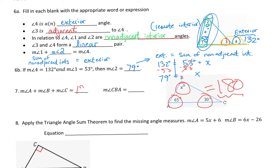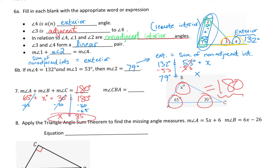Angle A plus angle B plus angle C needs to equal 180. We know that angle A is 65 degrees, angle B is X degrees, and angle C is 30 degrees — it's got to equal 180. So I'm going to take my calculator and subtract from 180: 180 minus 30 minus 65, and I got 85. So the missing angle, which we called X, must be 85 degrees.